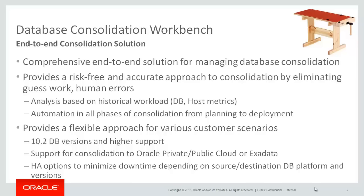Within the project we specify a name and description, then we choose whether to do consolidation from databases to servers or databases to databases. We are going to do databases to servers. We pick the source databases and can filter which ones we want to see — in our case, the ones in Oracle Redwood Shores. We're going to pick out five databases for the consolidation project, using multi-select. On the next screen we can see the selected databases and the resources they require to work properly.